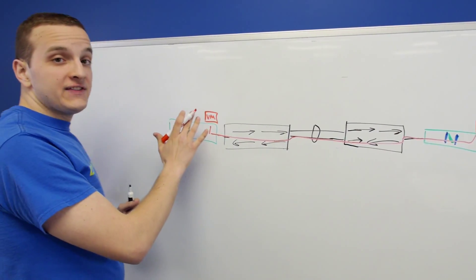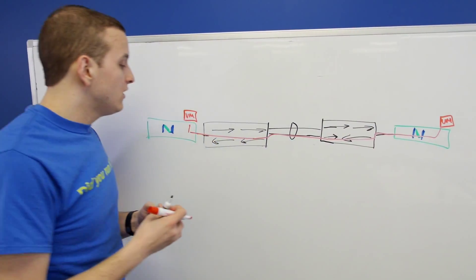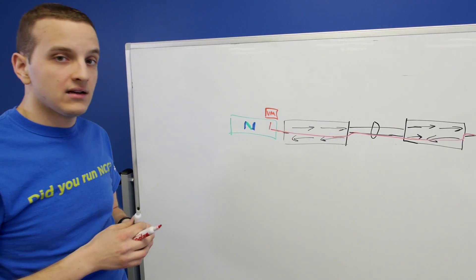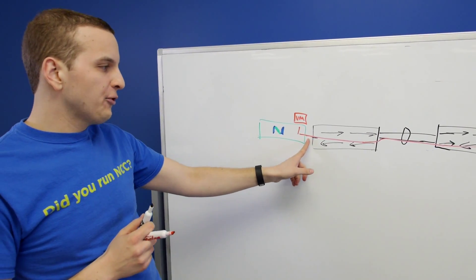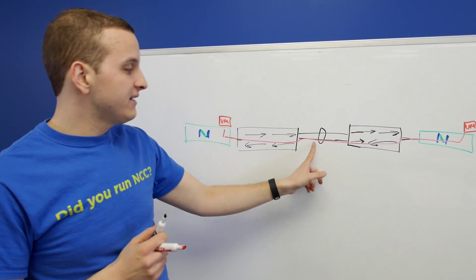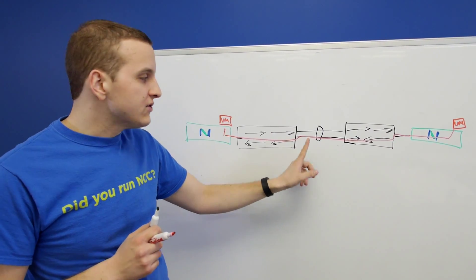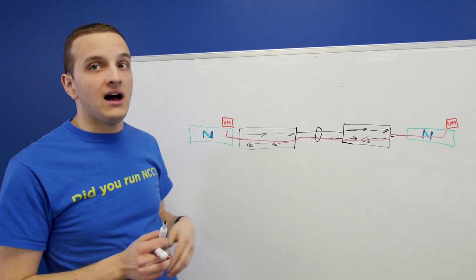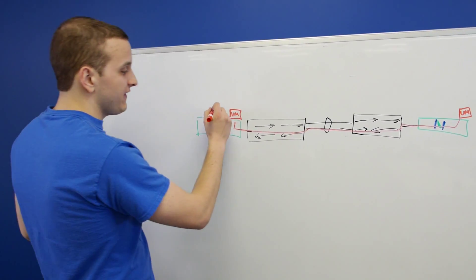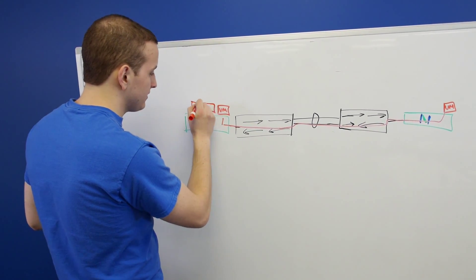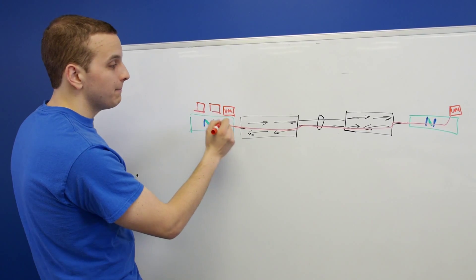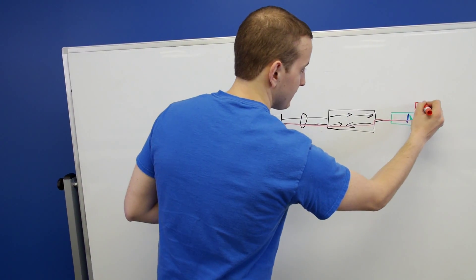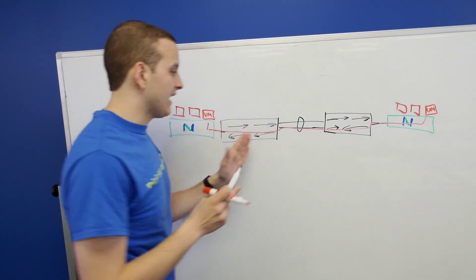So if you did an iPerf test now between these two VMs, you'd only notice a 10 gig speed. That's both because of this and because you're only using one link. You can't get full 20 gig between these two VMs. The real benefit comes from when you add additional VMs here. These other VMs might choose to get hashed over the other link.